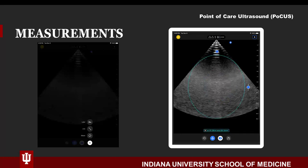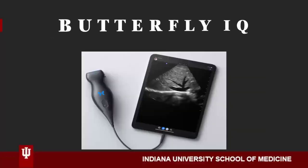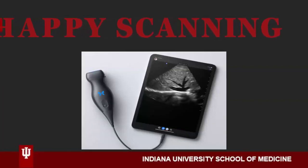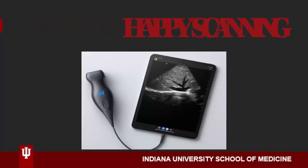Notice the two arrows pointing from the blue dot to the right — this allows us to rotate the measurement to best fit our area of interest. I hope this intro video will help you better utilize the various functions of the Butterfly IQ point-of-care ultrasound device. Happy scanning!